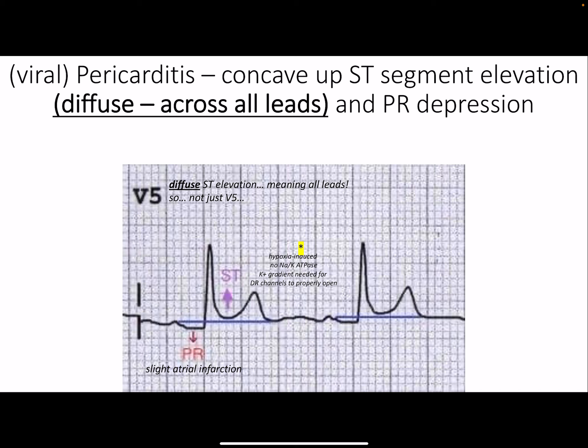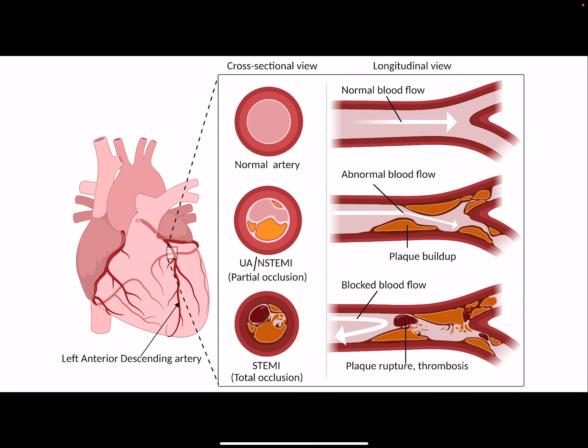Pericarditis, often caused by a virus, causes ST segment elevation and PR depression on the EKG. Importantly, it's diffuse — it appears in all leads. This is a key way to distinguish it from MI: a myocardial infarction only affects leads corresponding to the territory of the occluded artery (e.g., an LAD occlusion might only affect V3 and V4), not aVR or aVF.